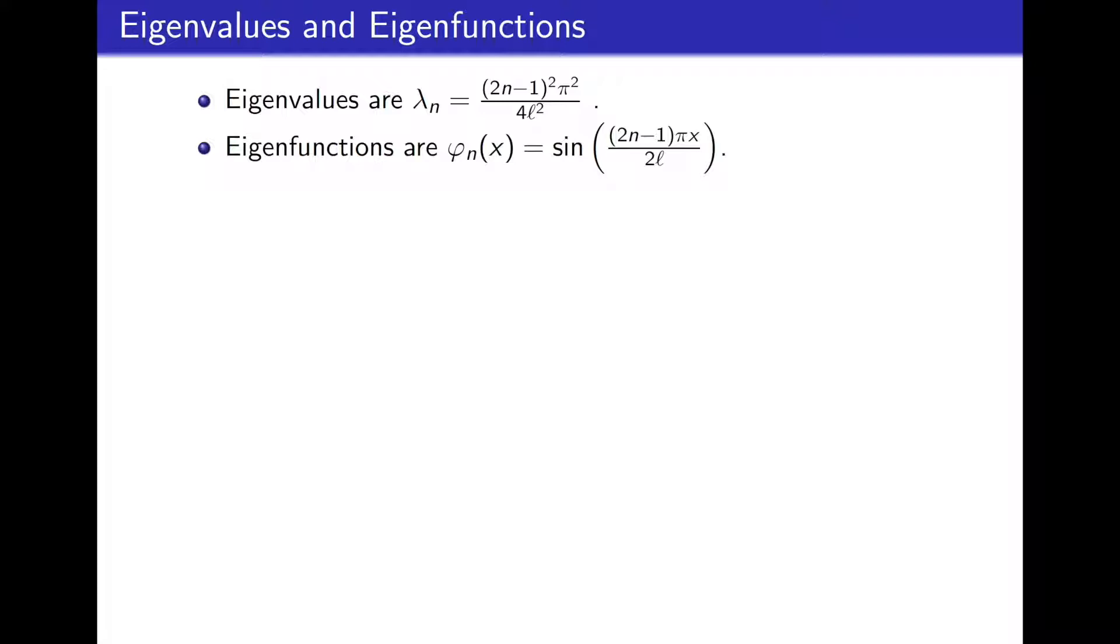Now we have the following eigenvalues and eigenfunctions. Once again, we see that we have one eigenpair for every natural number.